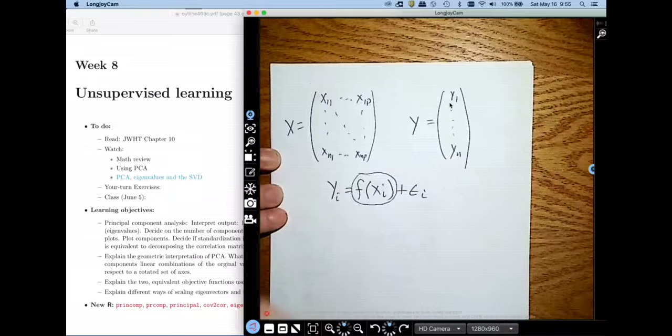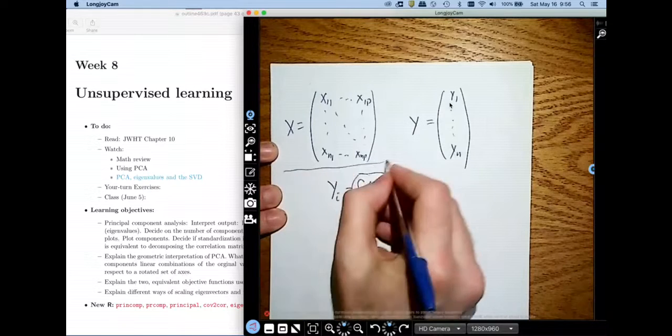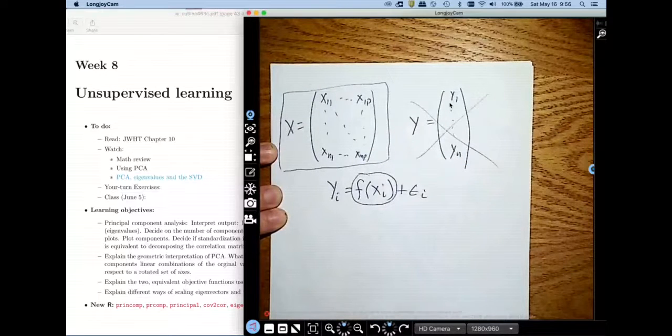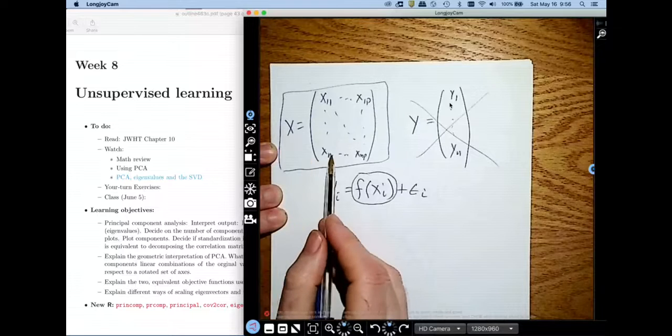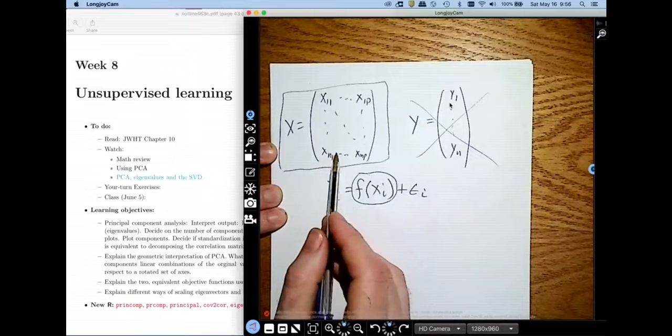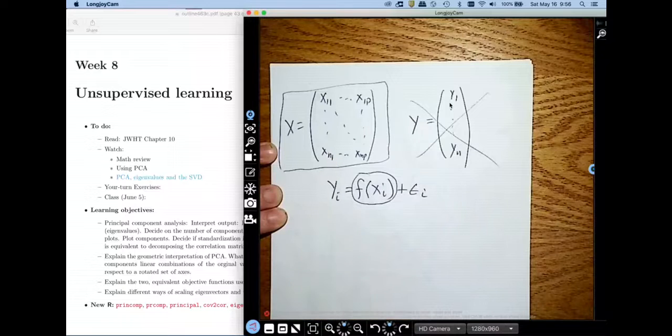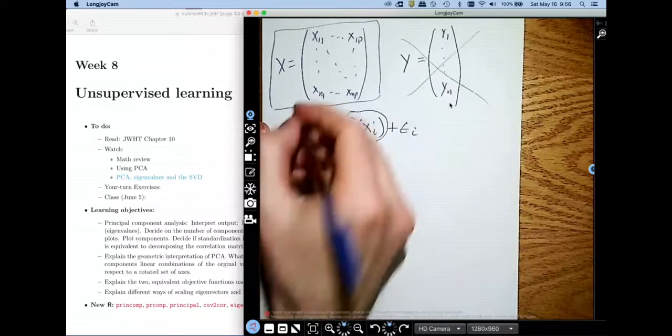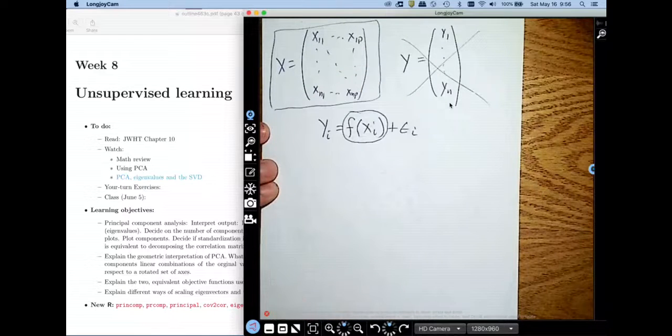The unsupervised learning problem is where we only get an X matrix. We don't get any y's, only X's. And then the question is, are there interesting patterns or features in this X matrix that I can study?